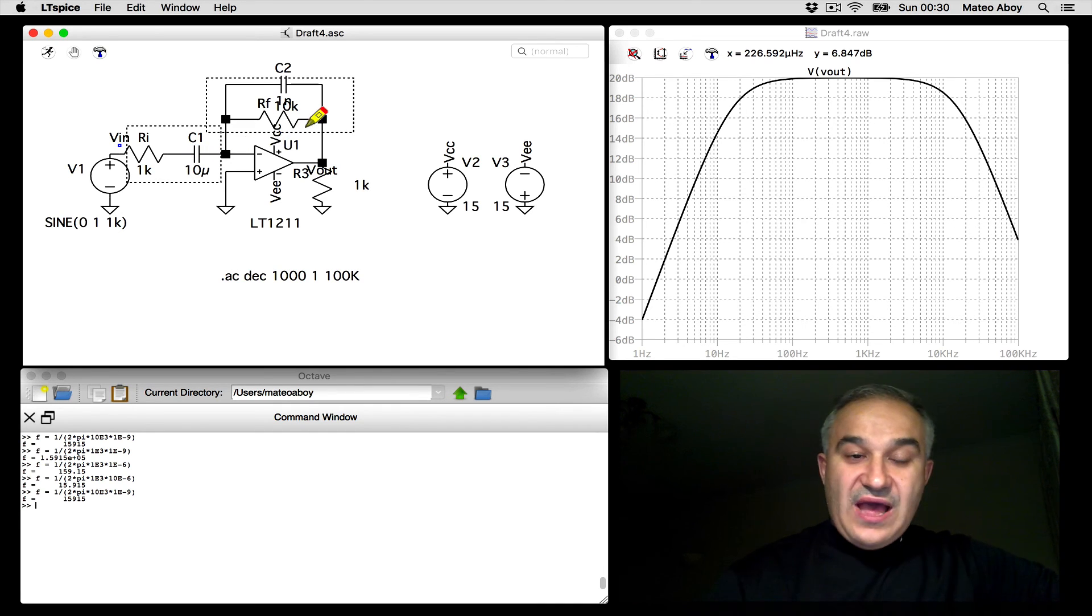Now the corner frequency of the high-pass filter is determined by the capacitor as well as RF. And the corner frequency of the low-pass filter is determined by C and RF. And of the high-pass filter by the capacitor and RI.